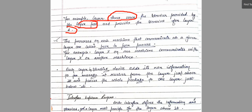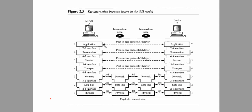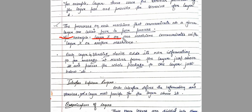For example, the application layer on the sender side communicates with the application layer on the receiver side using the same protocols. Similarly, the transport layer on the sender side communicates with the transport layer on the receiver side. When one layer communicates with the same layer on a different machine, this is defined as a peer-to-peer process. So if layer X on one machine communicates with layer X on another machine, that is a peer-to-peer process.